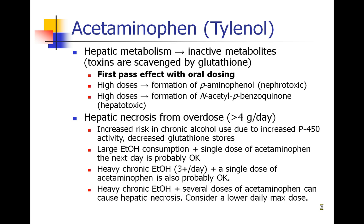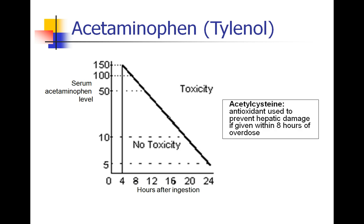As an aside: when patients do overdose on Tylenol, the drug used to treat it is acetylcysteine — an antioxidant that can help prevent hepatic damage if given within eight hours of overdose. Charts are available where you can measure a patient's serum acetaminophen level and estimate how many hours since ingestion. For example, if someone comes in eight hours after ingestion with a serum level of 50, they're probably fine; but if it's 100, we may consider treating them for toxicity.